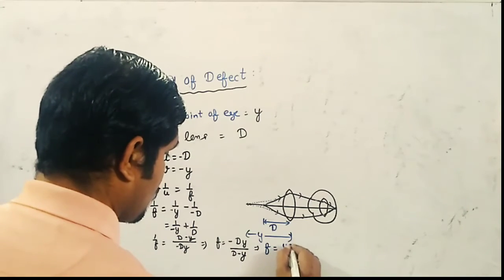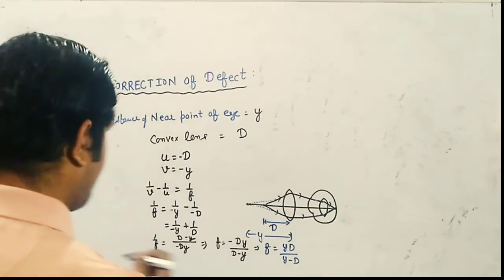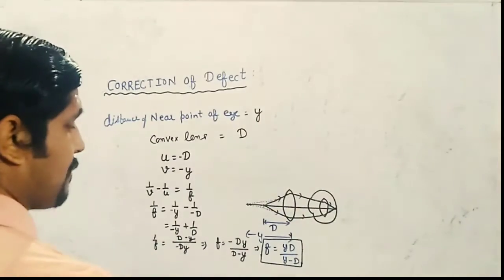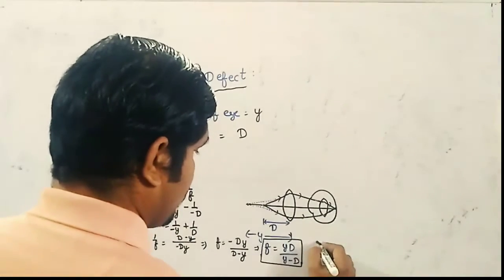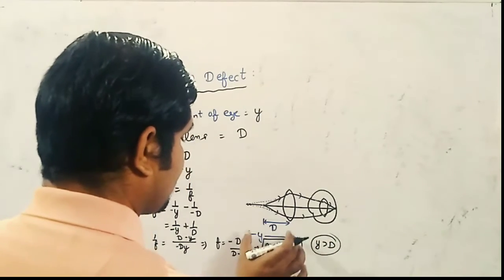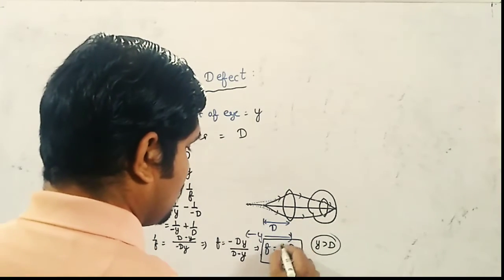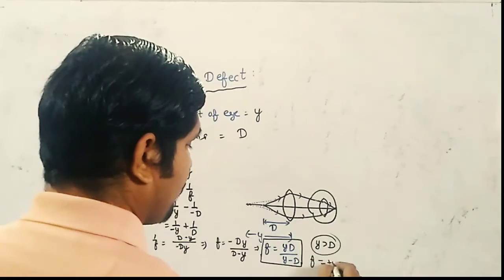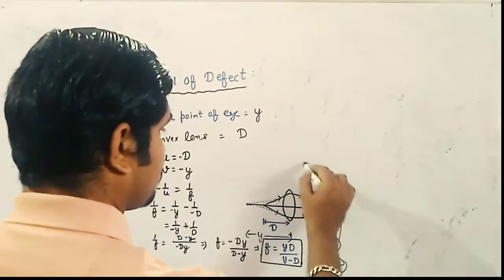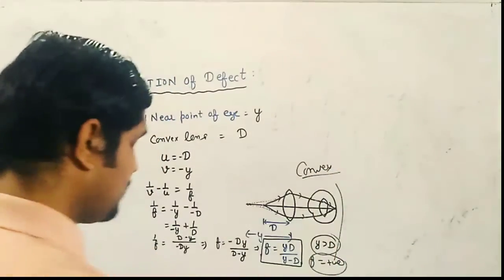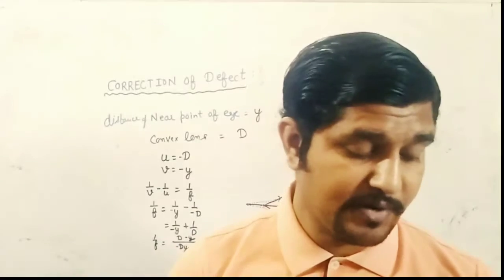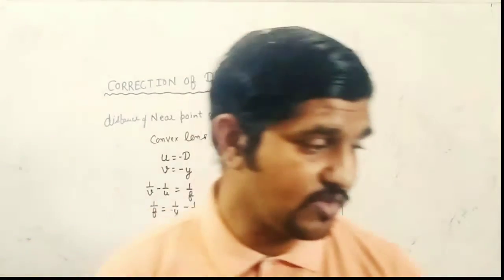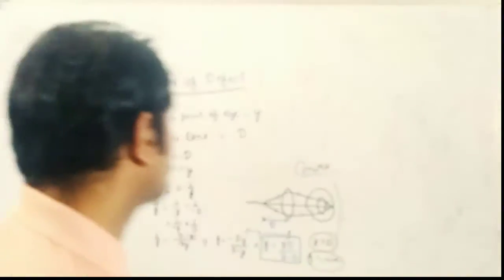So F equals DY / (Y minus D). In this case, since Y is greater than D, this value is positive, which means the focal length F is positive. This confirms that for correction of hypermetropia defect, we use a convex lens.